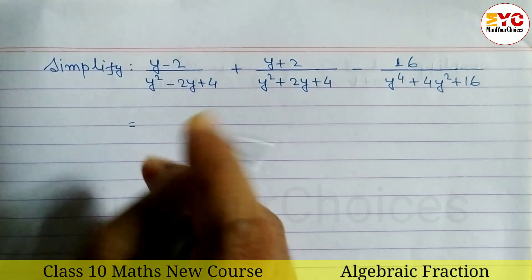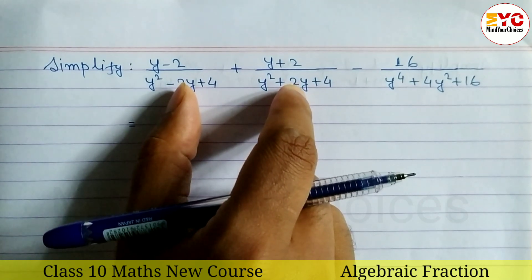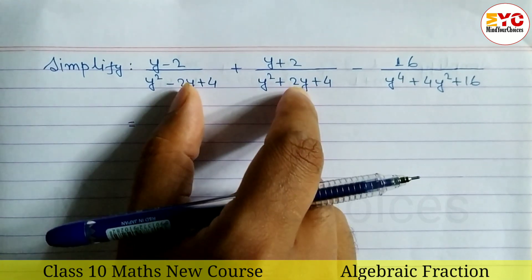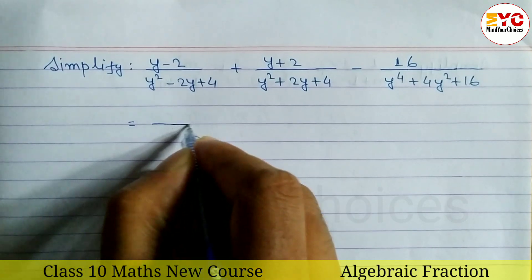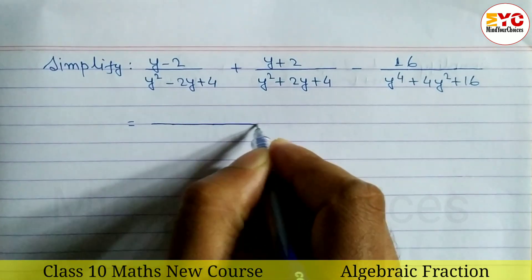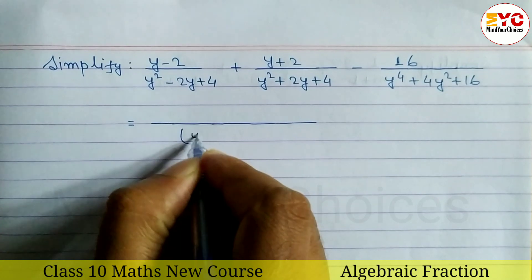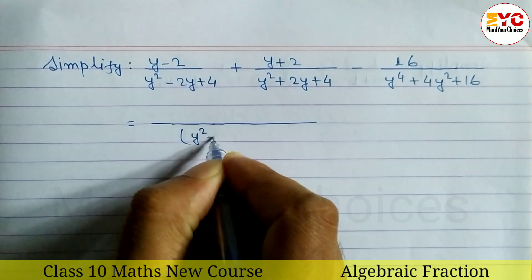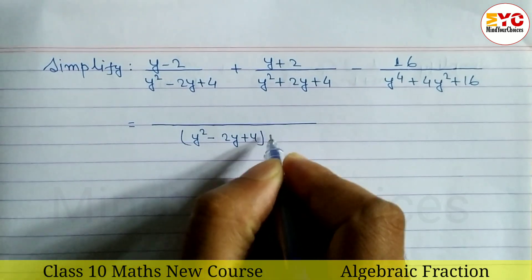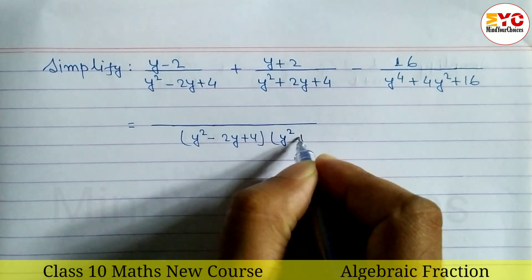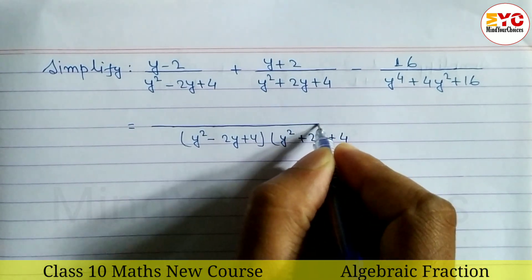So first of all, I need to take the first and second terms and then we need to take LCM. So what is the LCM of these two terms? We can write y squared minus 2y plus 4 and y squared plus 2y plus 4 as the LCM.